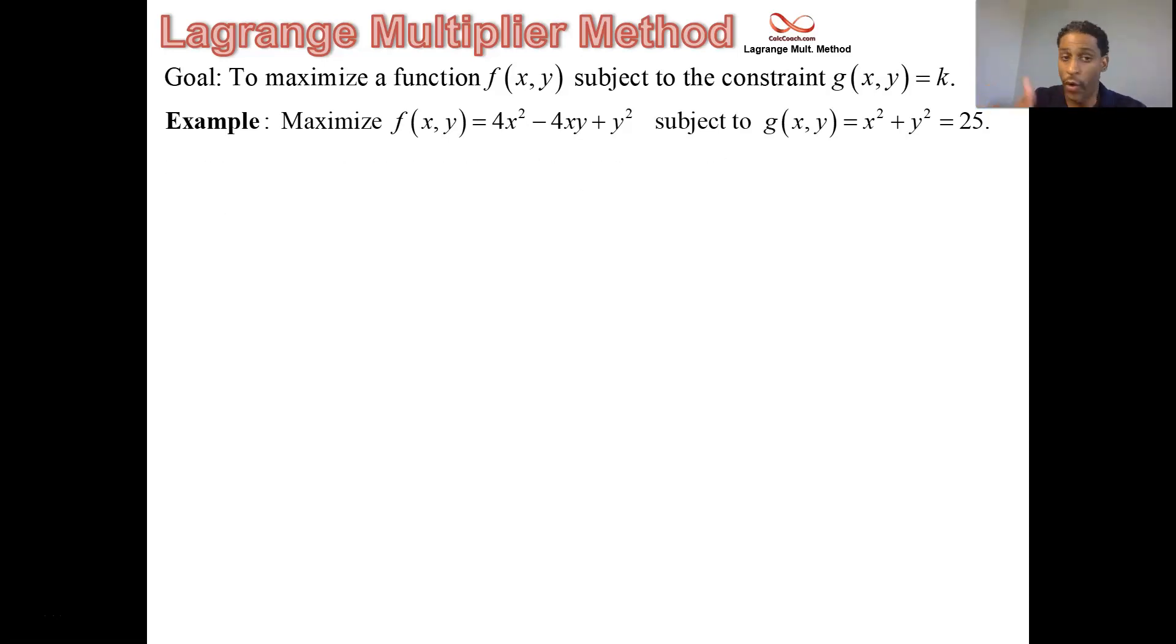So we have a function that is 4x² - 4xy + y². The constraint is x² + y² = 25. That should look familiar—that is a circle of radius 5 centered at the origin. So this is a multivariable function, a three-dimensional graph of this.